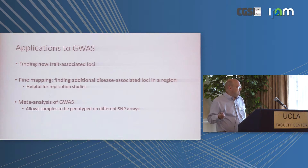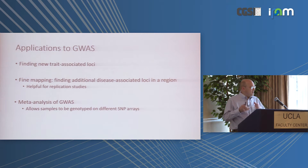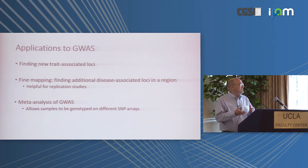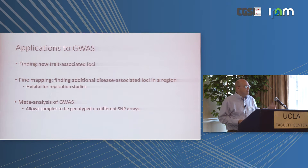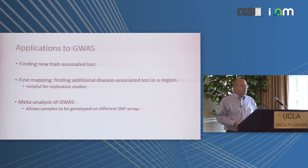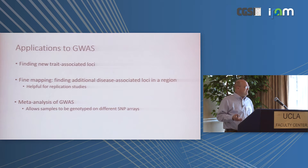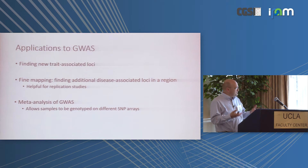Imputation of sporadic missing genotypes has been around for a long time, but it came into prominence in 2007, where a group from Oxford with the Wellcome Trust Case Control Consortium and simultaneously a group in Michigan — Gonçalo Abecasis' group — developed methods for imputing ungenotyped markers using reference data. The initial application was defining new trait-associated loci, and it did produce some power.